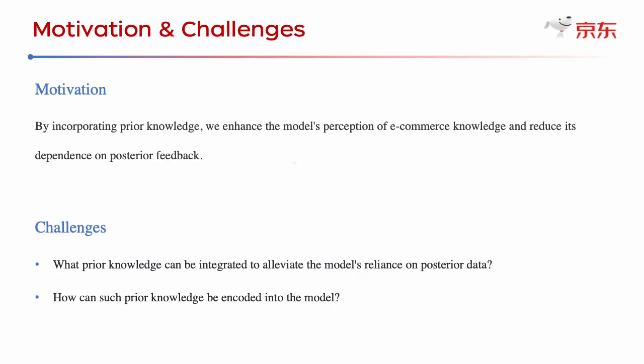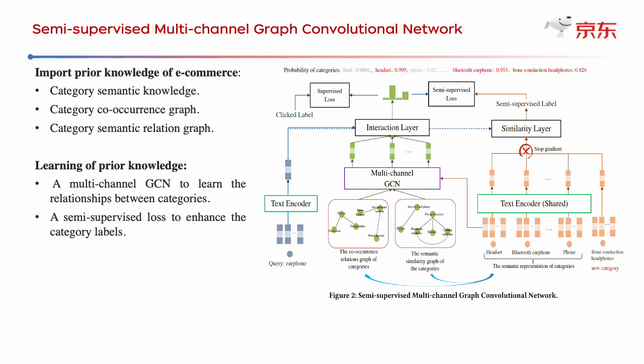To address these problems, we can enhance the model's perception of e-commerce knowledge and reduce its dependence on posterior feedback by importing prior knowledge. The main challenge is what prior knowledge can be used and how to encode it into the model. In our paper, we import prior knowledge which includes category semantic knowledge, category co-occurrence, and semantic relation graphs.